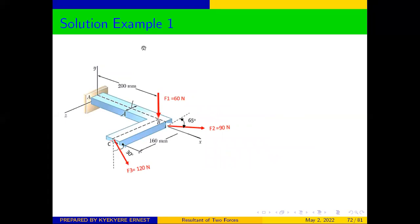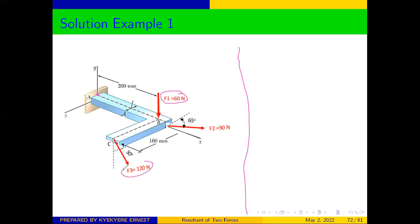Let's look at how to solve this question. We are asked to find the force-couple system at A, which means we want to replace all these forces with just a single resultant force and a single moment at A. Don't forget that this is a 3D body. Anytime you have a 3D body, we use the vector approach, not the scalar approach. Since the forces are given in scalar form, we need to convert them to vector form.